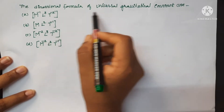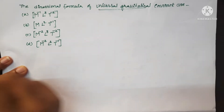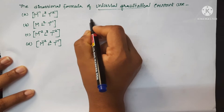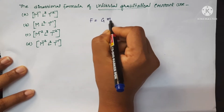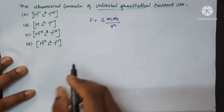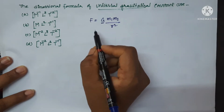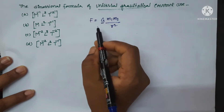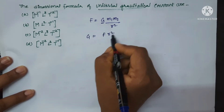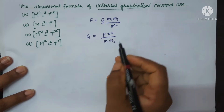Let's see the dimensional formula of universal gravitational constant. The formula is F equal to G into M1 M2 upon R square. From this, we have to find the universal gravitational constant's dimensions. G is equal to F R square upon M1 M2.